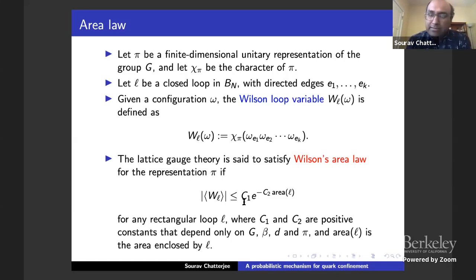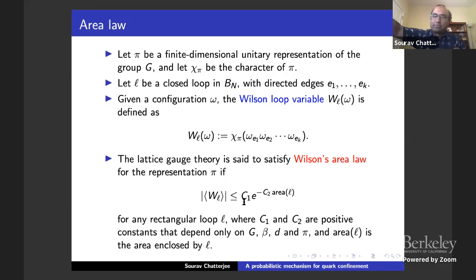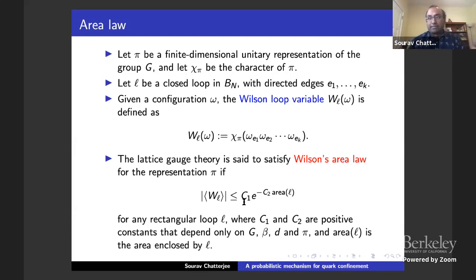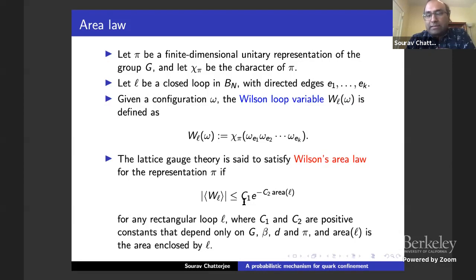Here is why this is surprising: you're multiplying those matrices along the loop, and if you have decay of correlations, you'd expect something to the minus the perimeter, because you're multiplying things which become more and more independent as you go far away. So why do we have the area instead, which is much bigger than the perimeter? That's the mysterious thing about the area law — I don't know how Wilson conjectured that this would be the case.